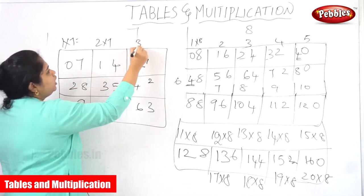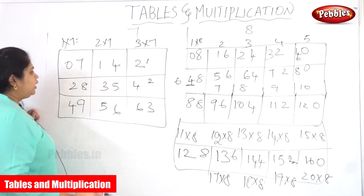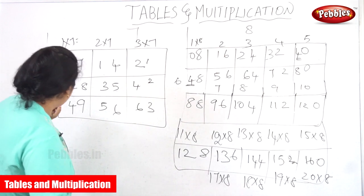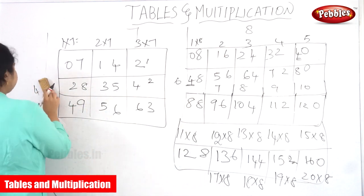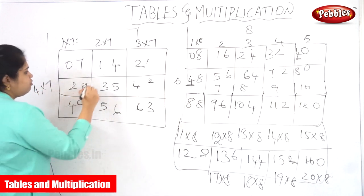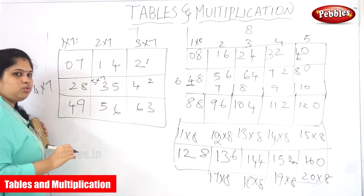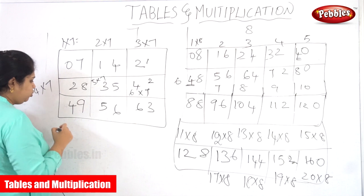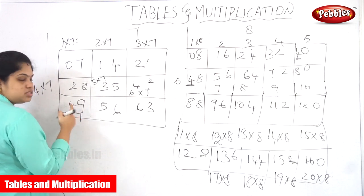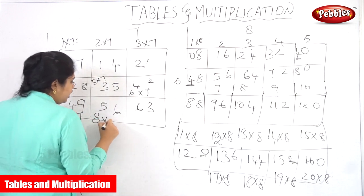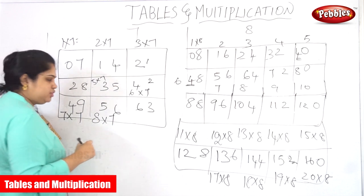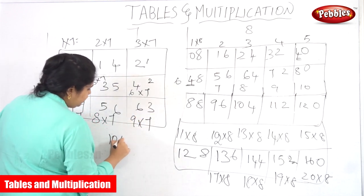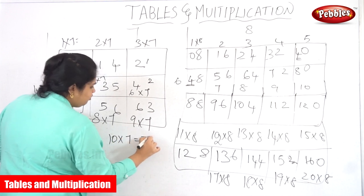So: 1 into 7 is equal to 7; 2 into 7 is equal to 14; 3 into 7 is equal to 21; 4 into 7 is equal to 28; 5 into 7 is equal to 35; 6 into 7 is equal to 42; 7 into 7 is equal to 49; 8 into 7 is equal to 56; 9 into 7 is equal to 63; 10 into 7 is equal to 70.